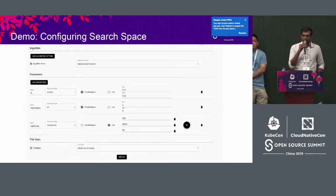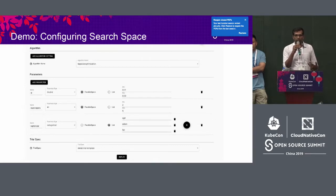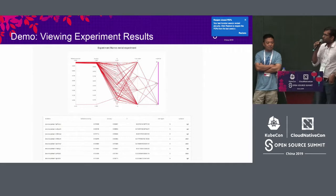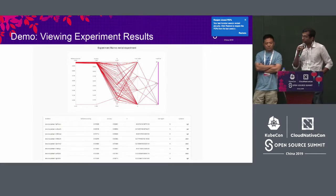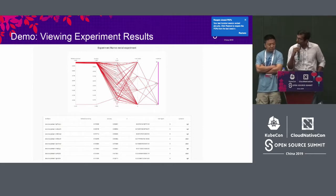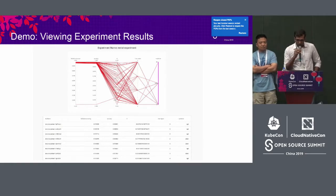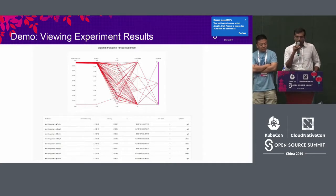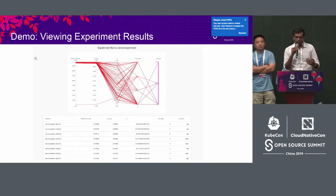The last option is the trial spec, the most important section, where you specify the actual job to run. This shows one run using Bayesian optimization — you can see the final results converged to 99%. For each trial, we can see what parameter values produced that result, and you can go back and figure out which were the best values to use.